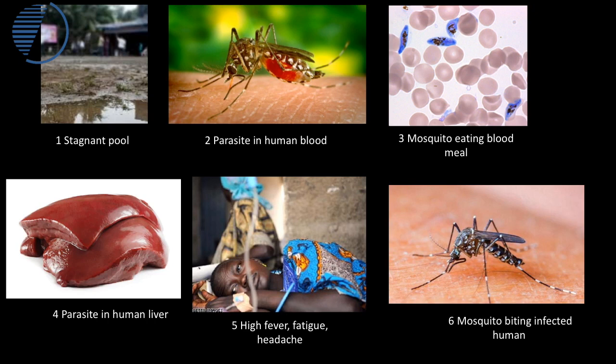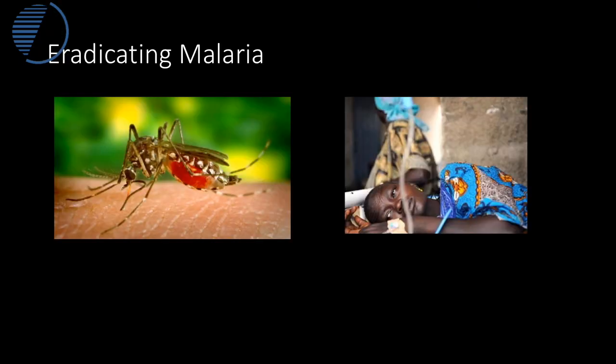To tackle this disease there are two kinds of strategies: strategies which prevent human beings coming into contact with mosquitoes, and strategies which try to tackle the parasite and the mosquito. One approach is to eliminate all mosquitoes — if you could make all mosquitoes die somehow, there would be no malaria.